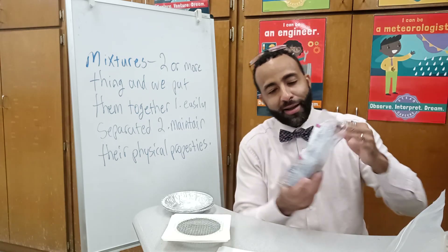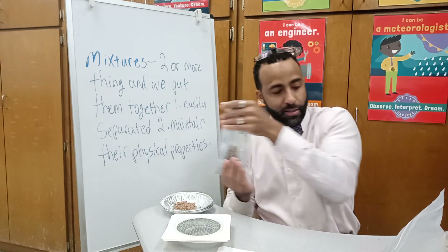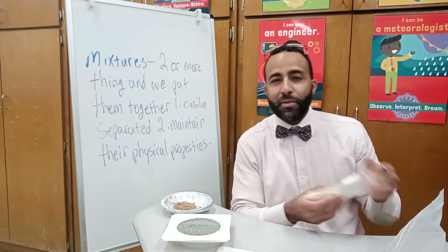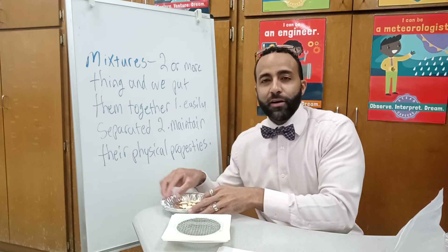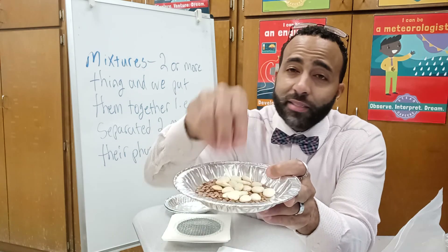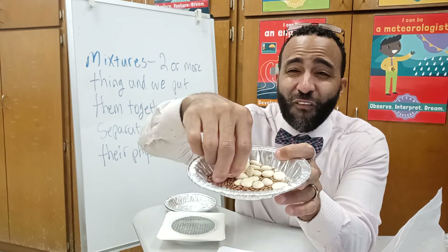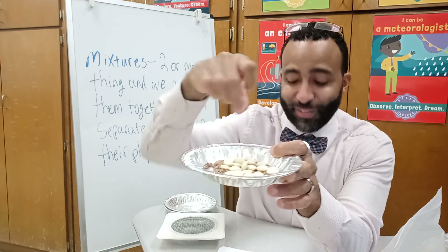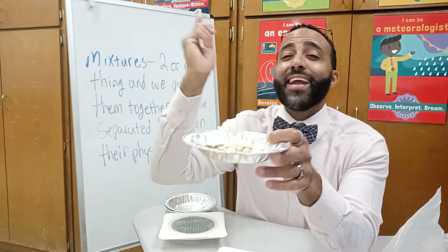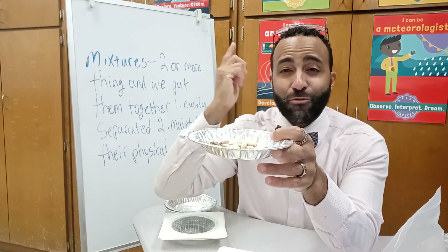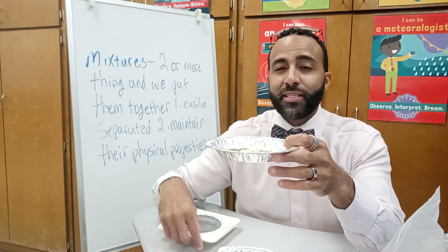A sieve is a tool we can use to help separate objects. For example, if I take some lentils and some big lima beans and mix them together, I could pick the lima beans out one by one — but the lentils? That would take forever. We want to work smarter, not harder. We want to work efficiently and effectively. That is the goal for science.